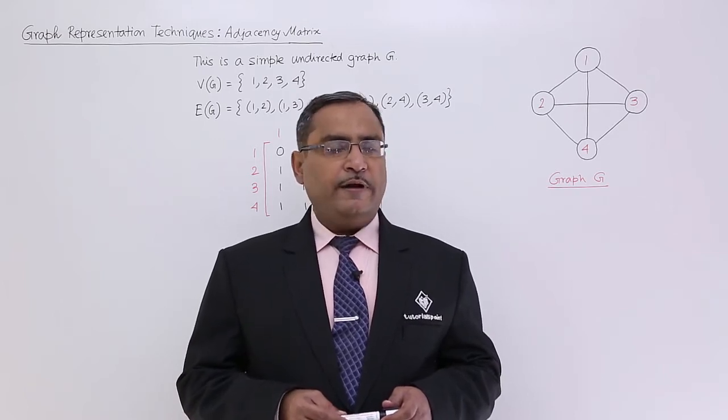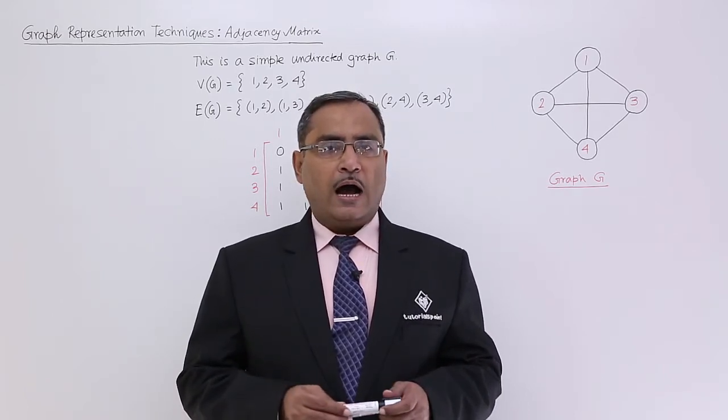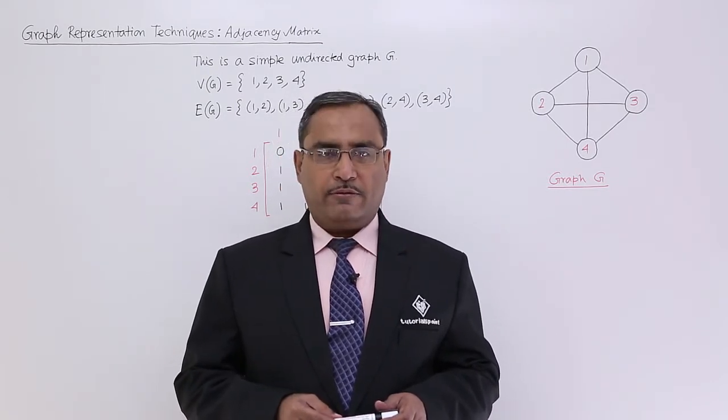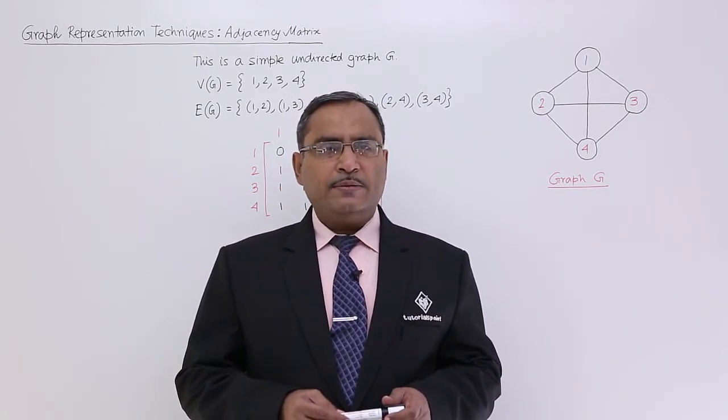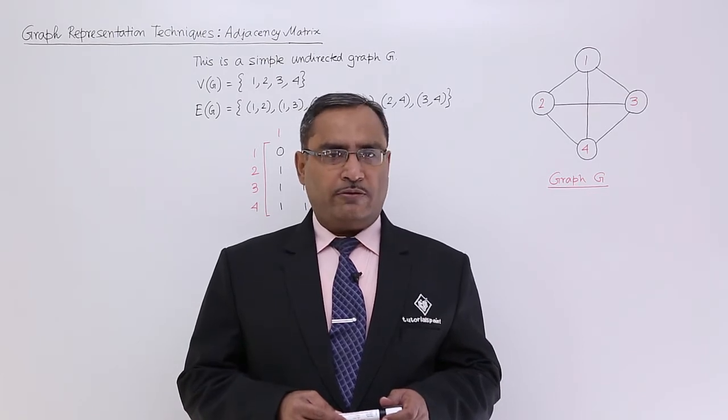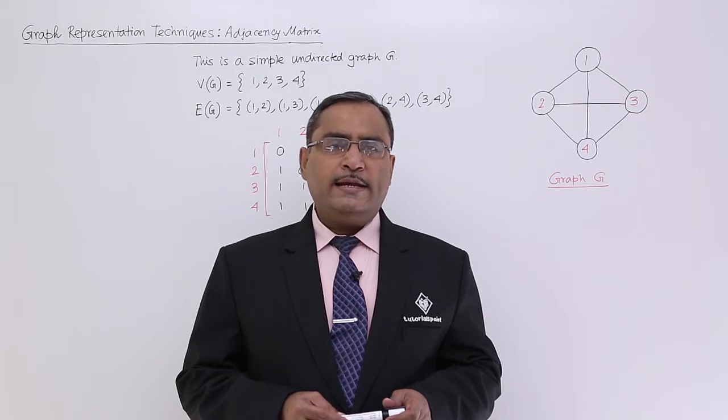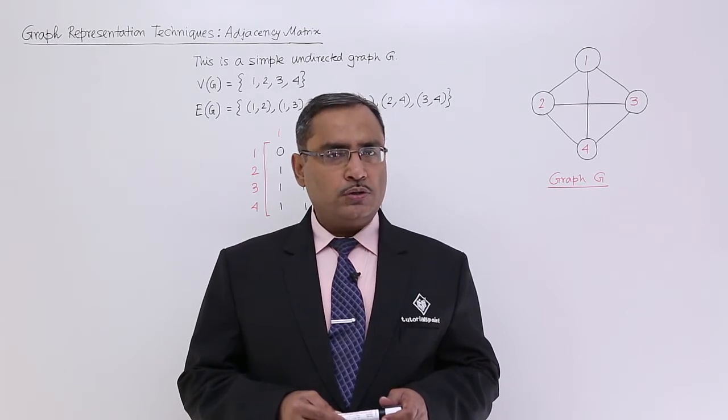A graph can be represented very simply, very easily, and in a very popular way known as the adjacency matrix. Adjacency matrix is nothing but a square matrix having dimension n cross n, where n is the number of nodes in the graph.